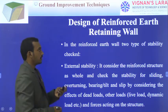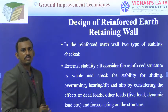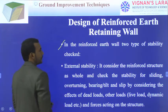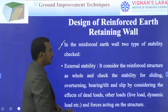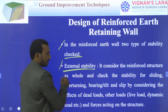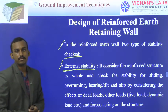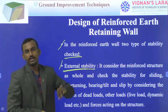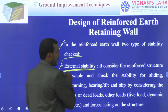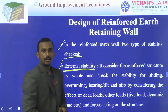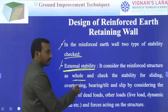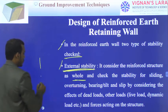For the design of a reinforced earth retaining wall, we need to check two types of stability. External stability considers the reinforced structure as a whole and checks stability against sliding, overturning, and bearing capacity. External stability means: whether this entire part is going to slide laterally or overturn.